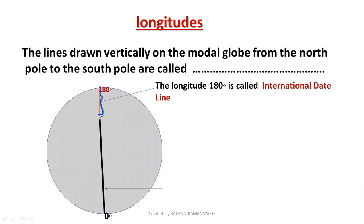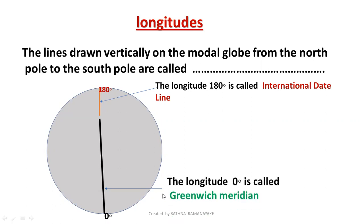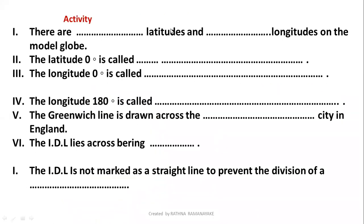The International Date Line lies across the boundaries of countries and is not a direct straight line. Longitude zero degrees is called the Greenwich Meridian. It passes across the city of Greenwich in London, England.